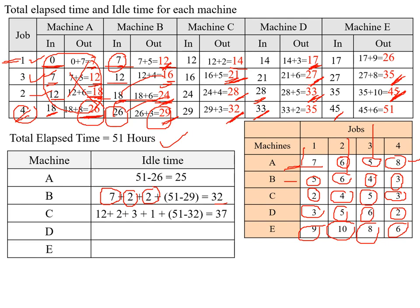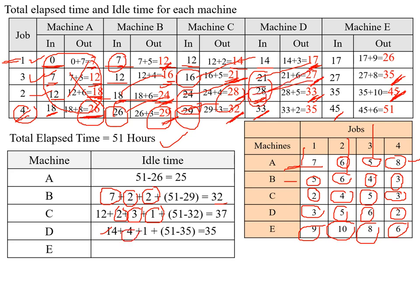For machine C, the initial waiting time is 12, with additional waiting periods between jobs. Final idle time is 51 − 32 = 19. For machine D, the initial waiting time is 14, then there is a 4-hour gap (21 − 17), then a 1-hour gap (28 − 27), and final idle time is 51 − 35 = 16. Total idle time for machine D is 35.